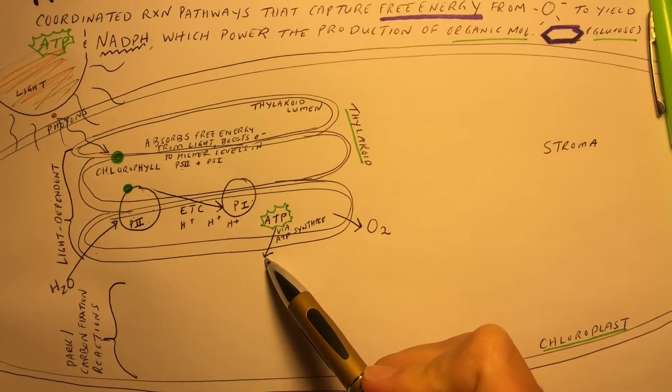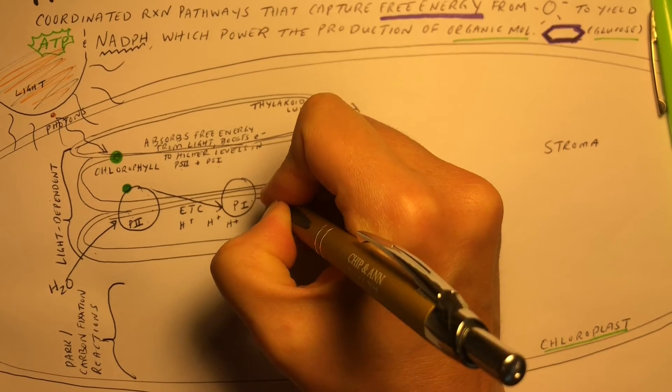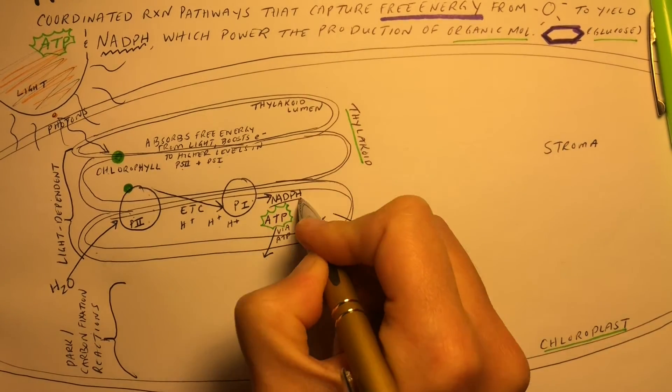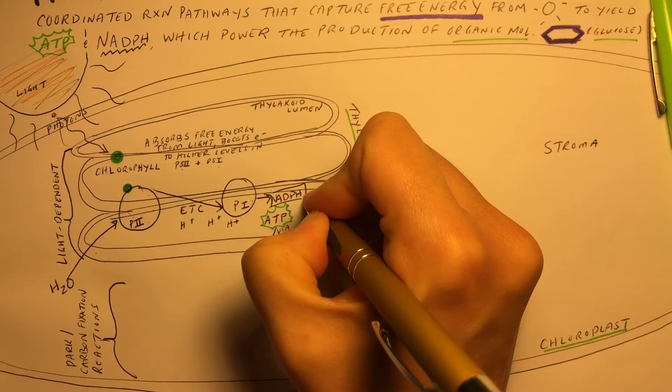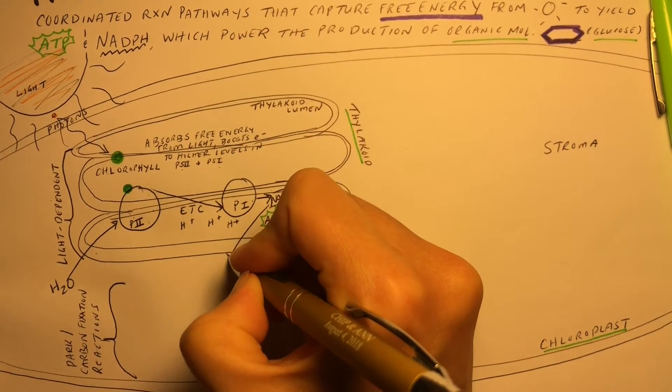This will be used in the Calvin cycle, or the carbon fixation reactions. NADPH, an electron carrier, is also formed in this process. This will also be used when we get to the dark reactions.